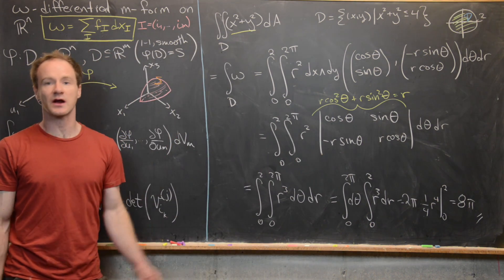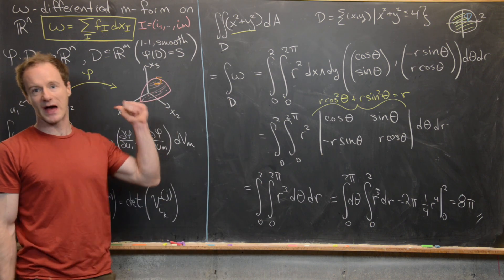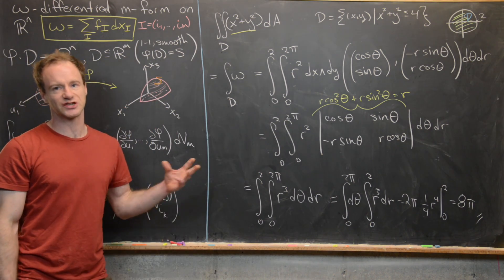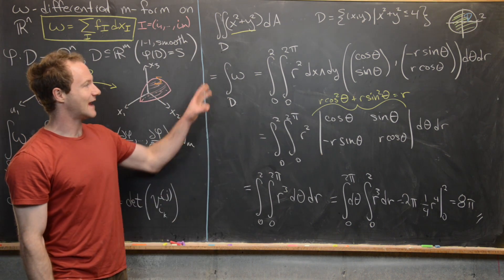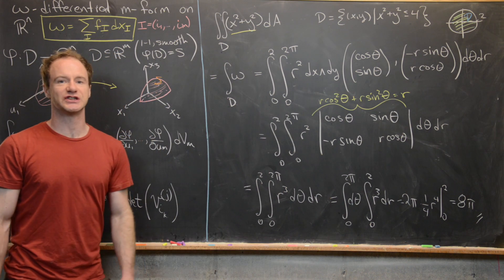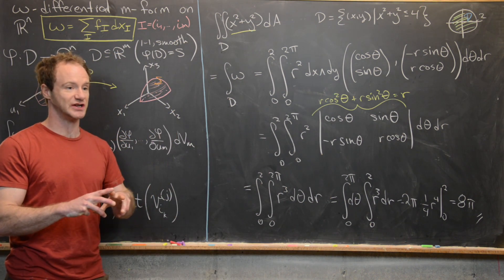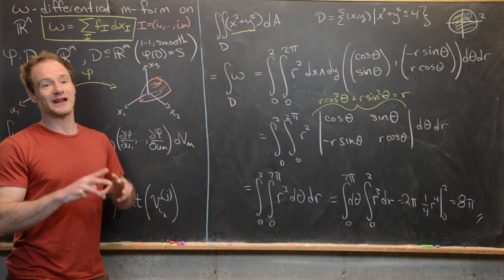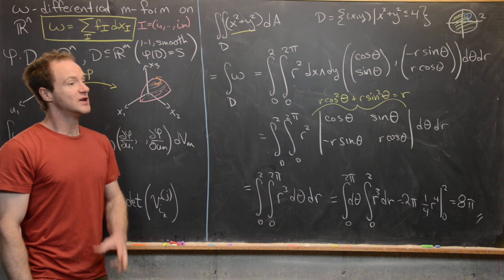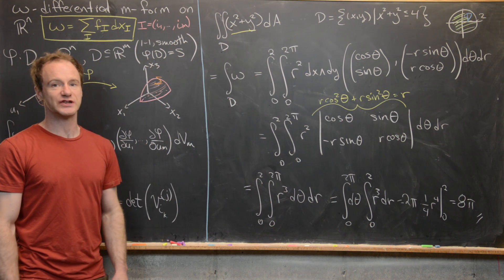The takeaway is that the change of variables formulas — including the one-variable version (essentially U-substitution) and the double integral version — can be reimagined as integrating the same differential 1, 2, or 3-form with a different parametrization for the region of integration. The same idea extends naturally to triple integrals.